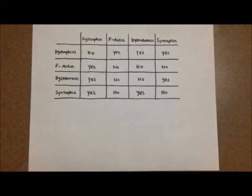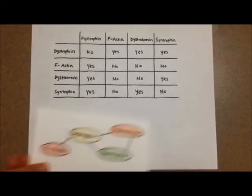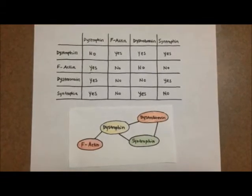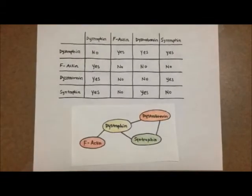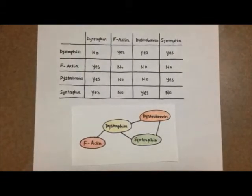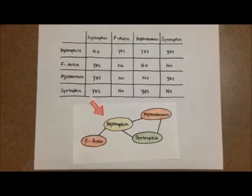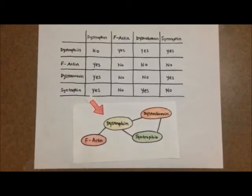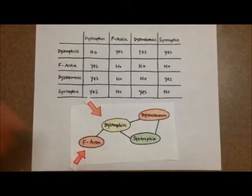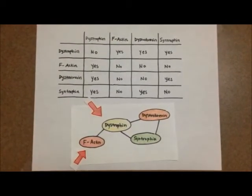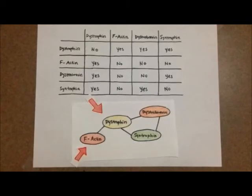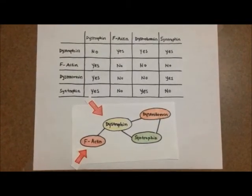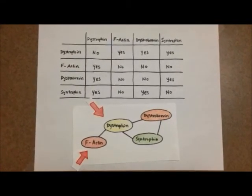From these results we were able to build an interaction map of the proteins we tested. Dystrophin interacts directly with the majority of proteins in the complex. It is a key component that links intracellular f-actin and the extracellular matrix, which includes the dystrophin-associated protein complex, which maintains muscle cell structure.